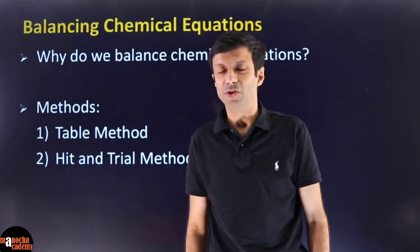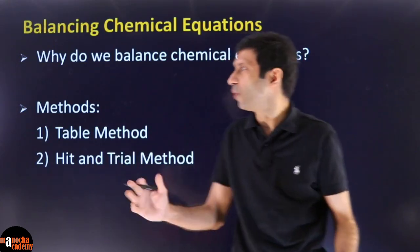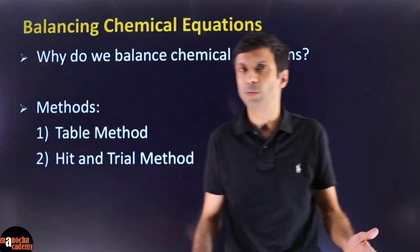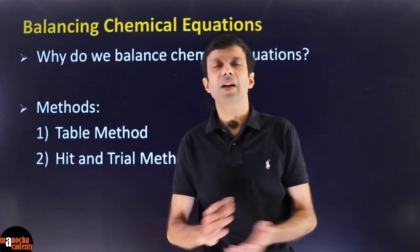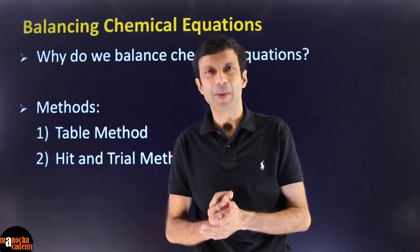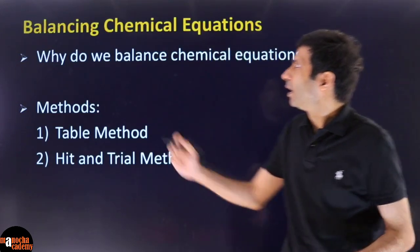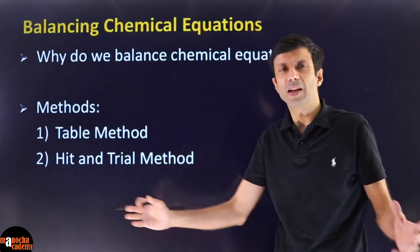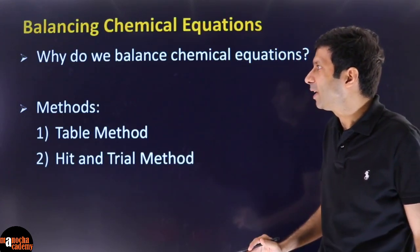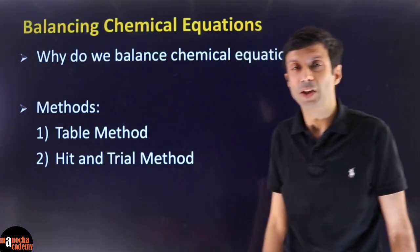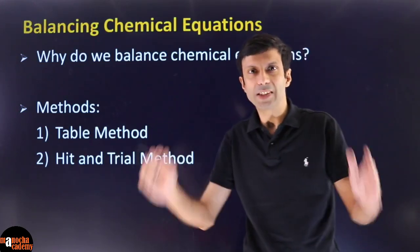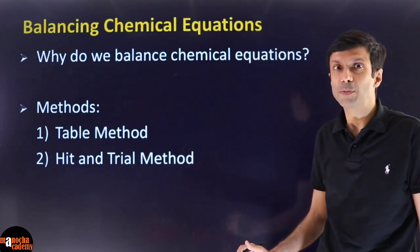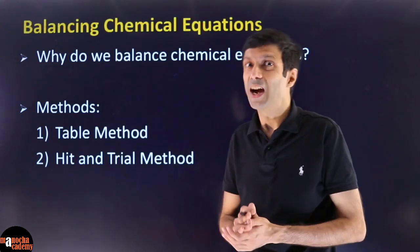So, balancing chemical equations. All of you know what a chemical equation is and how to write one — we discussed that in the previous class. In case you missed it, you can always watch the video. We'll be doing lots of equations when relevant in the chemistry chapters. So, why do we need to balance chemical equations? We'll see why, and I'm going to discuss two important methods: the table method, which is a systematic method of making a table, and then the fast hit-and-trial method.